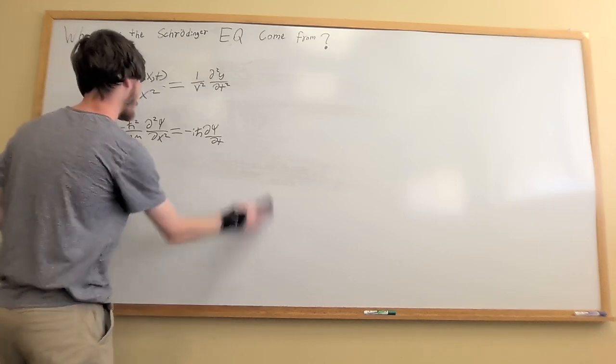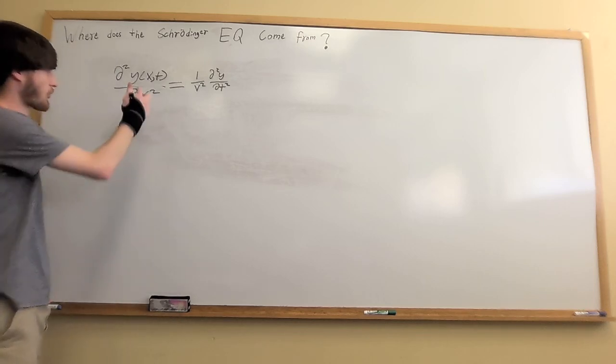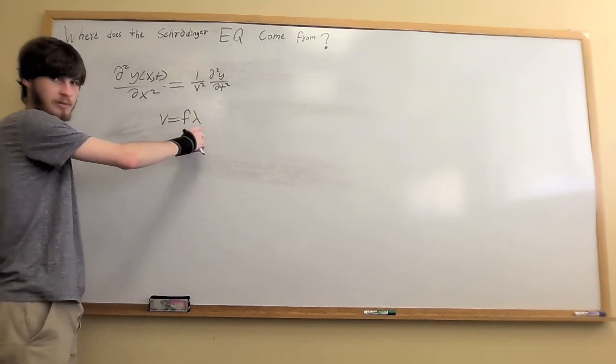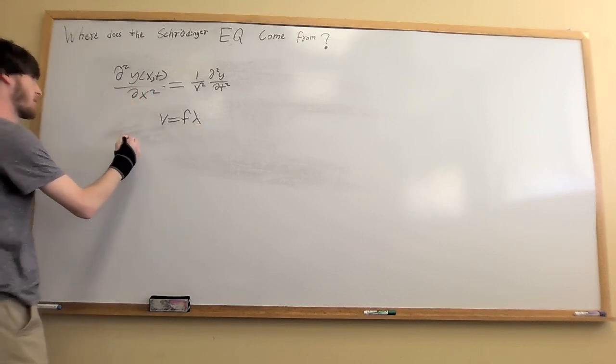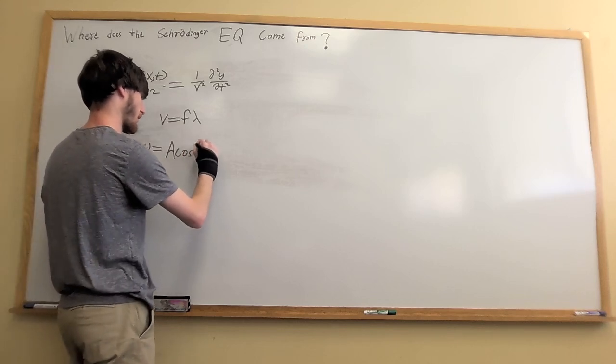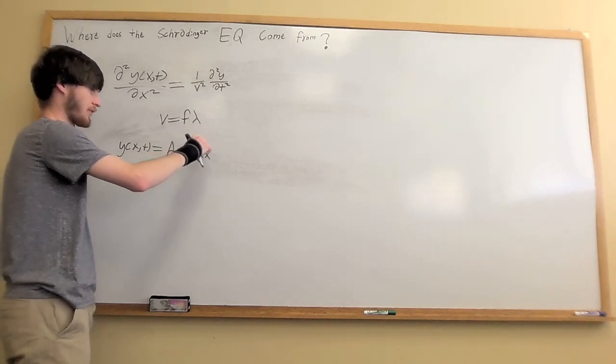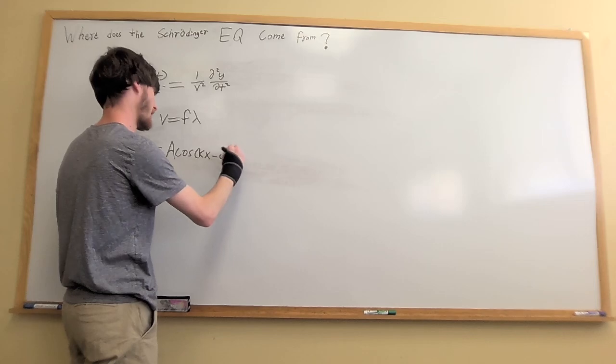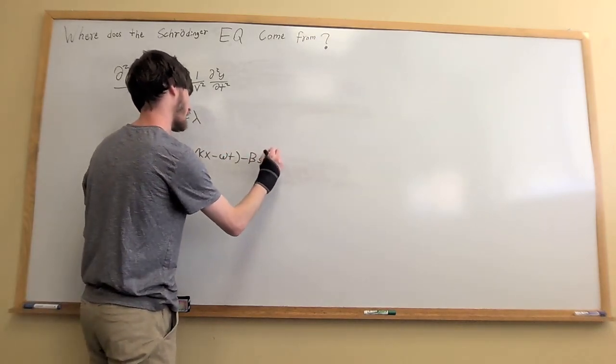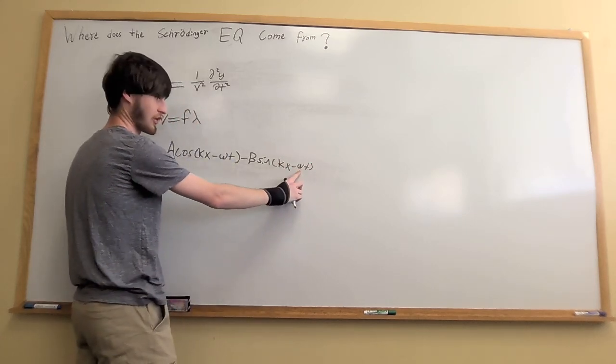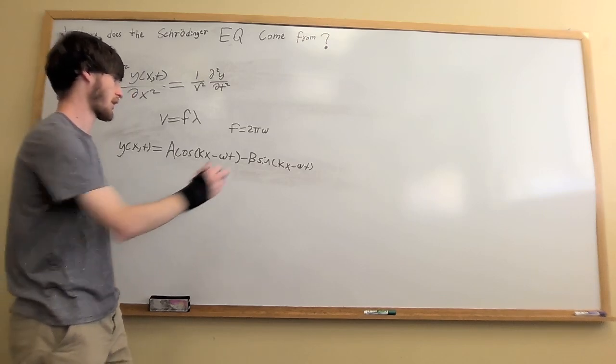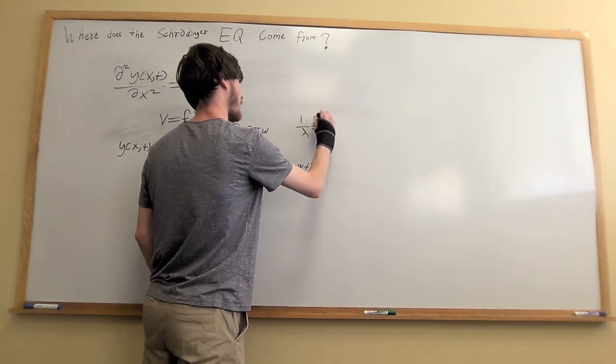We go through the general solution of the mechanical wave first. The general solution to this equation, given v equals f times lambda, so frequency times its wavelength, would be in the form y of x of t equals a cosine kx minus omega t, where k is directly related to the wavelength by a factor of 2 pi and it's inverted, minus b sine kx minus omega t. Omega is a circular frequency, a factor of 2 pi directly related to f.